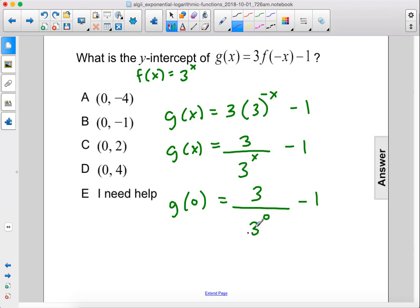3^0 is 1, so 3 divided by 1 is 3. 3 minus 1 equals 2. So the y-intercept is (0, 2). The answer is C.